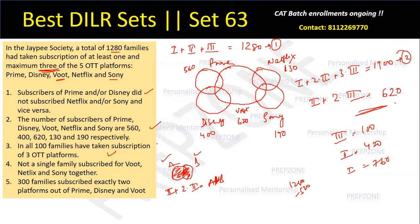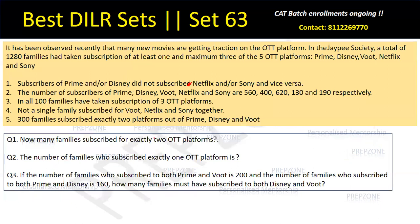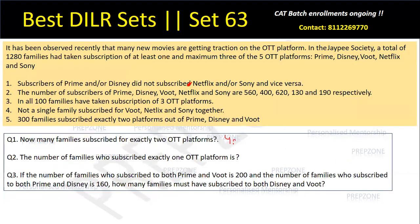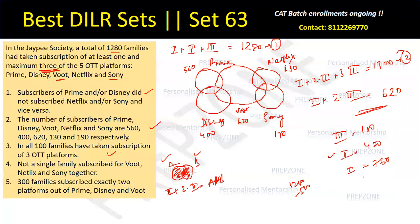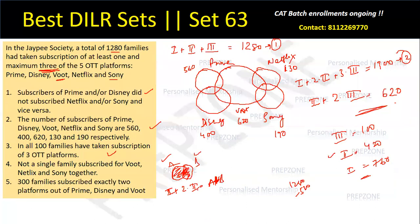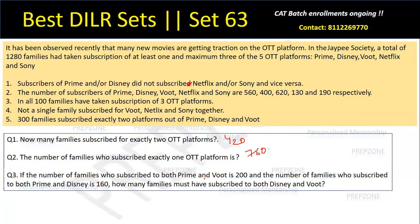I'll use this information. Before moving on to other information, I'll look at all the questions. How many families subscribe for exactly two? I've already calculated the value — exactly two is 420, so I directly write 420. The number of families who subscribe to exactly one OTT platform is 760. Now comes question three: if the number of families who subscribe to both Prime and Bootz is 200, and the number of families who subscribe to both Prime and Disney is 160, how many families must have subscribed to both Disney and Bootz?